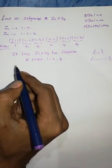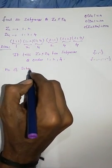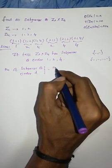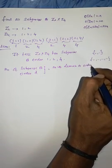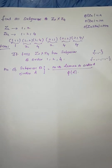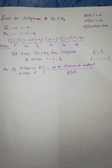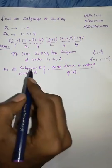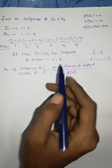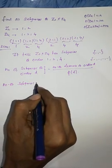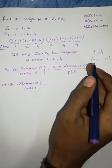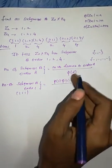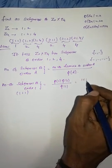To find the number of subgroups, I will give a general formula: the number of subgroups of order D equals the number of elements of order D divided by φ(D). For order 1, I have only one pair whose LCM is 1, so the count is φ(1)·φ(1) / φ(1) = 1·1/1 = 1. So there is 1 subgroup of order 1.